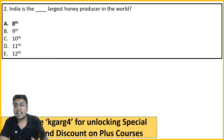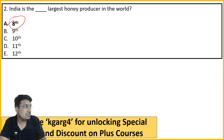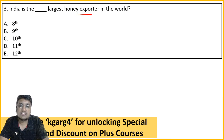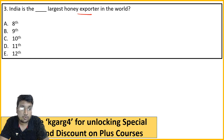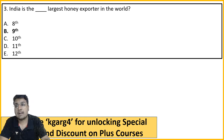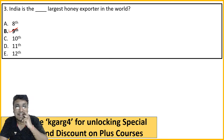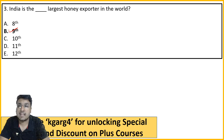The right answer is 8th - our production rank is 8th in the world. However, for export rank the answer changes - we are 9th. So India's honey production rank is 8th and honey export rank is 9th in the world.